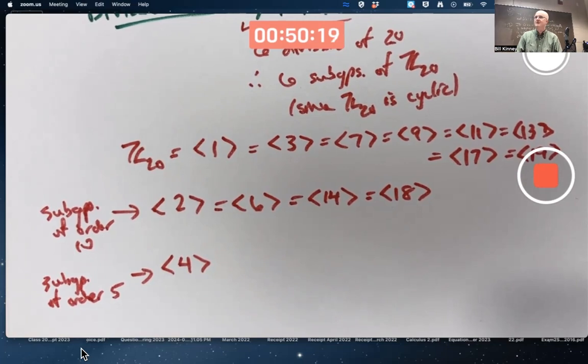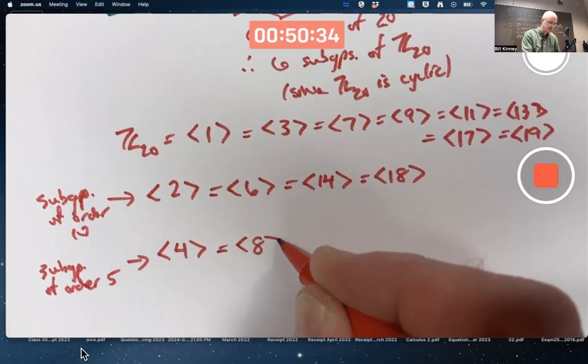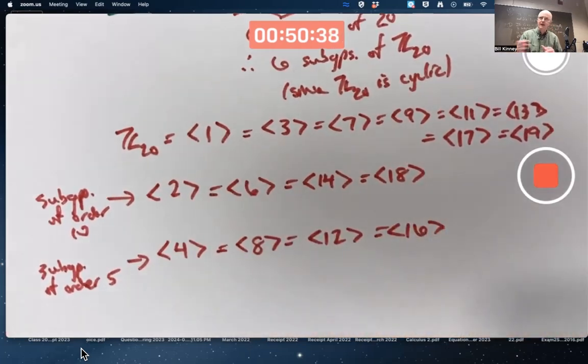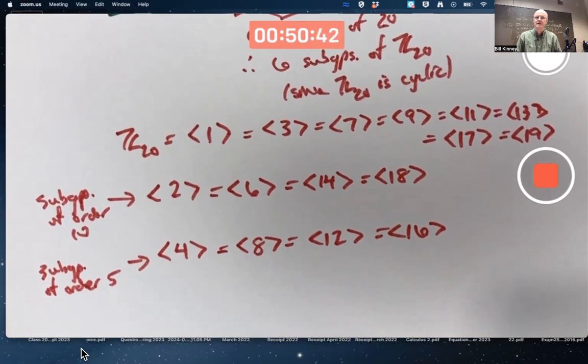What are the generators? It's got order 5. 5 is prime. 1, 2, 3, and 4 are all relatively prime to 5. Those multiples of this generator will also be generators. In fact, every non-zero element of this is a generator of this. This is worth checking by doing calculations on your own, maybe after class here.